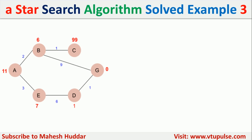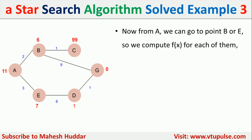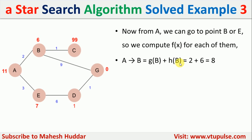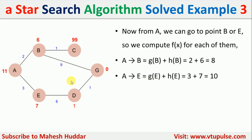A is the source node and G is the goal node. Applying the A* search algorithm, we first find all children of A — the nodes reachable from A — which are B and E. We compute f(x) = g(x) + h(x), where g(x) is the distance between nodes and h(x) is the heuristic value. f(B) = g(B) + h(B) = 2 + 6 = 8. Similarly, f(E) = g(E) + h(E) = 3 + 7 = 10.